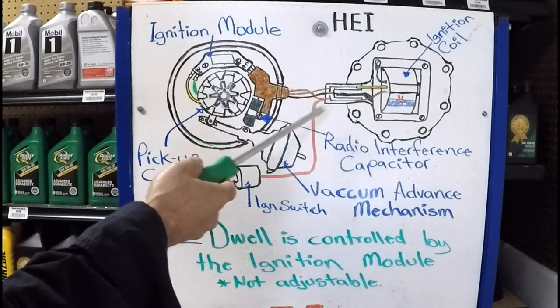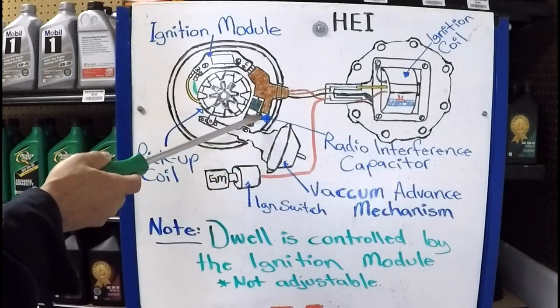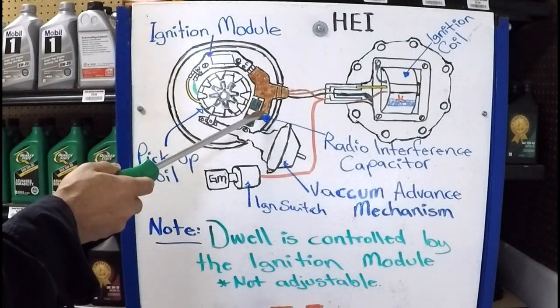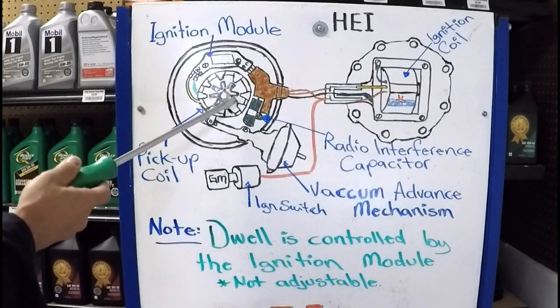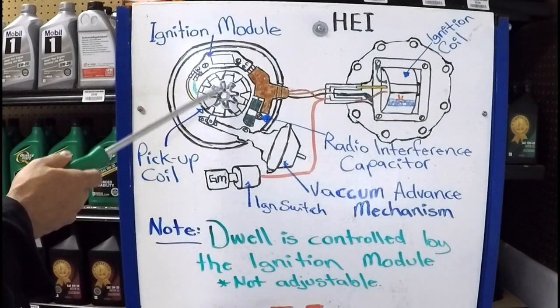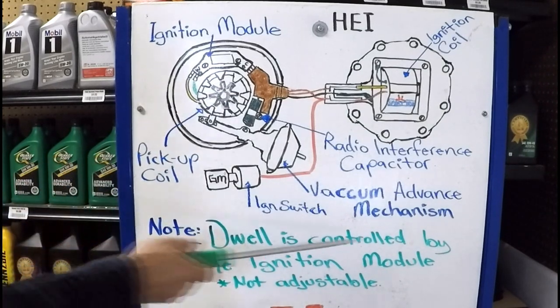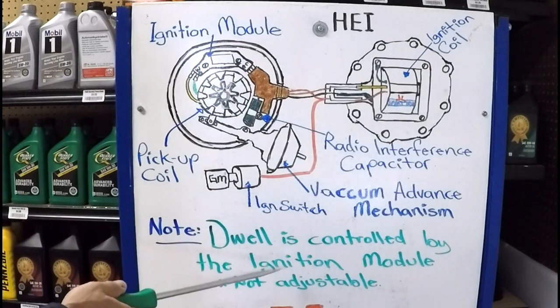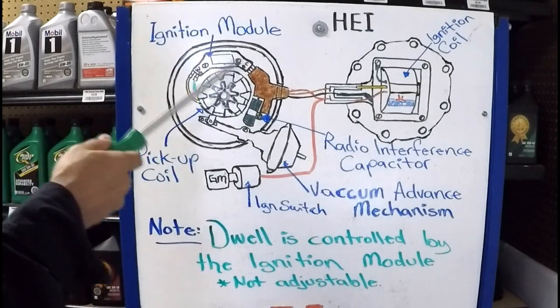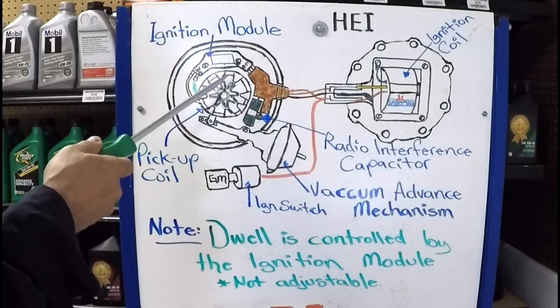And that's so you don't get noise in your radio. And this is not to be confused with a condenser from a point system. It has a different purpose. The dwell was adjusted when the gap of the points was adjusted. And on the electronic ignition, the dwell is controlled by the ignition control module. So it's not mechanically adjustable. It's already been programmed into the module, and it's going to vary depending on the RPMs.